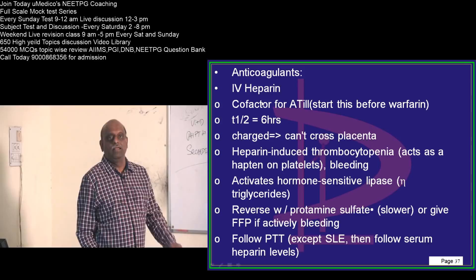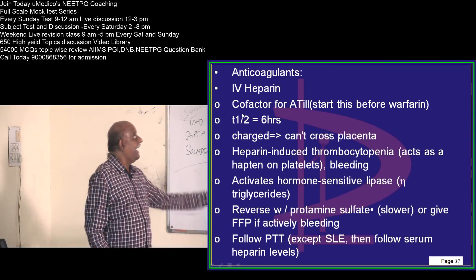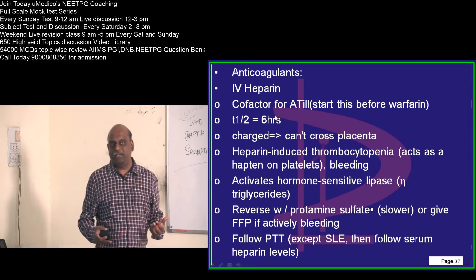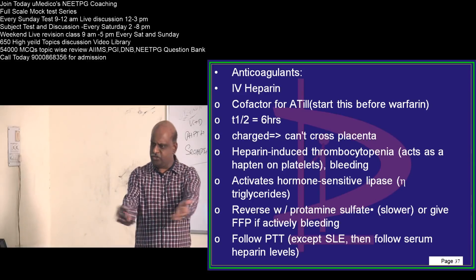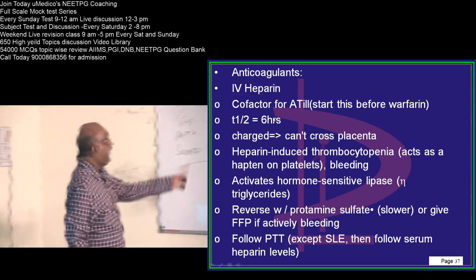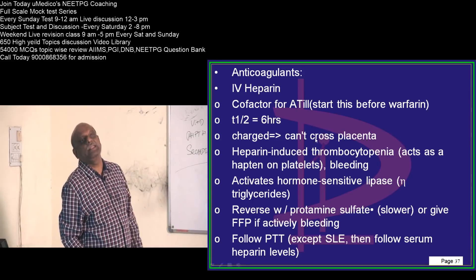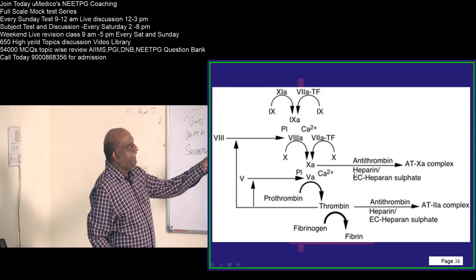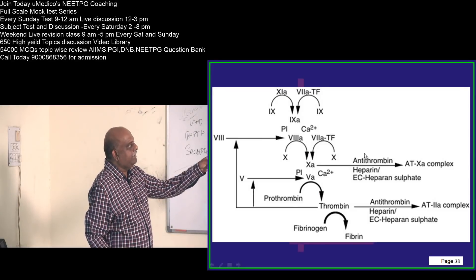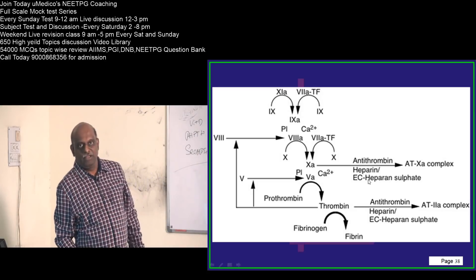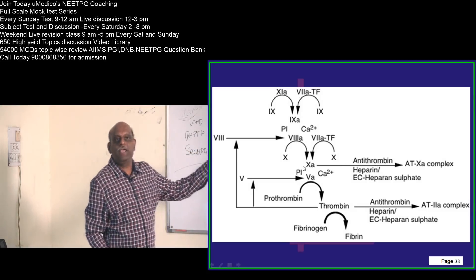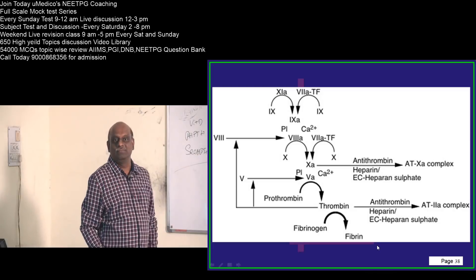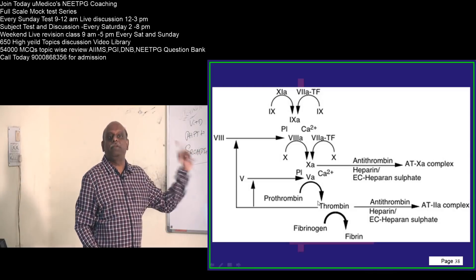The half-life of heparin is 6 hours. How does heparin act as an antithrombotic agent? Directly it does not do anything. Rather, it acts as a cofactor for antithrombin 3 — it activates antithrombin. Antithrombin, activated by heparin, then forms a complex with factor 10A, making 10A inactive. That is how it prevents clotting from happening.